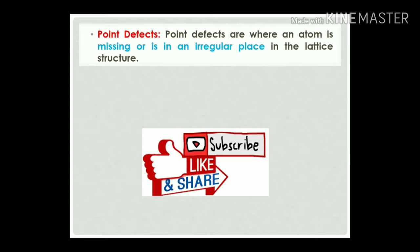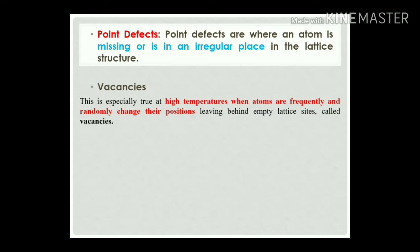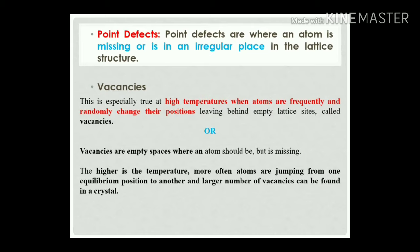Now, starting with defects — the point defects. Point defects are where an atom is missing or is in an irregular space in the lattice structure. In a perfect order structure, one atom permanently leaves its position, generating a vacancy. Vacancies are especially common at high temperatures when atoms frequently and randomly change their positions, leaving behind empty lattice sites. Vacancies are empty spaces where an atom should be but is missing. The higher the temperature, the more often atoms jump from one equilibrium position to another, and a large number of vacancies can be found.